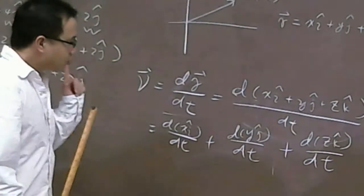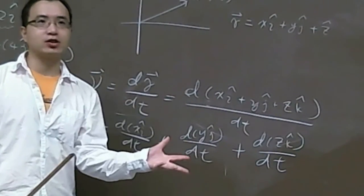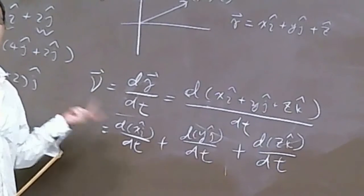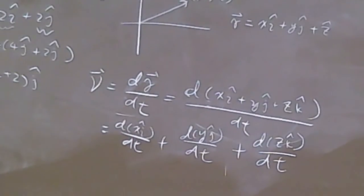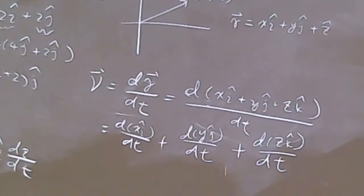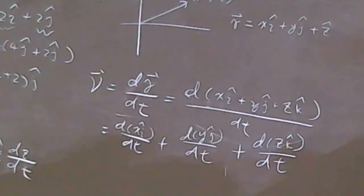Now, you take the derivative for each of them. Please note that i-cap, j-cap, k-cap, they are unit vectors in some fixed direction, so they are constant. So you can factor it out from the derivative. You will get i-cap dx/dt plus j-cap dy/dt plus k-cap dz/dt. And then you can see that dx/dt is Vx, velocity along X direction. dy/dt is Vy, velocity along Y direction. dz/dt is Vz, velocity along Z direction. So you get Vx i-cap plus Vy j-cap plus Vz k-cap.